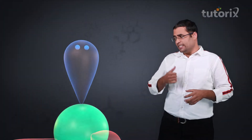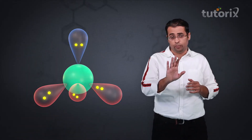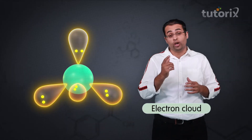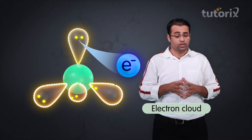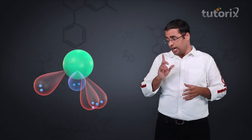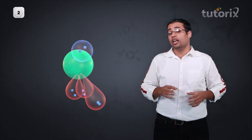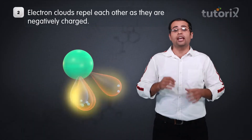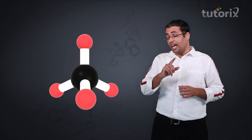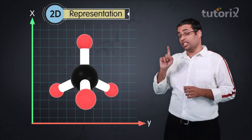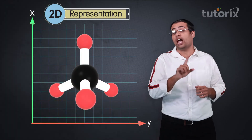These electron pairs move in a space around the central atom called the electron cloud. Because electrons are negatively charged, this electron cloud is also negative. There are a number of electron pairs around the central atom and each of these electron pairs repel each other. In Lewis's theory, we learned to write molecules on a piece of paper in two dimensions — the X and Y axis only — with no Z axis.